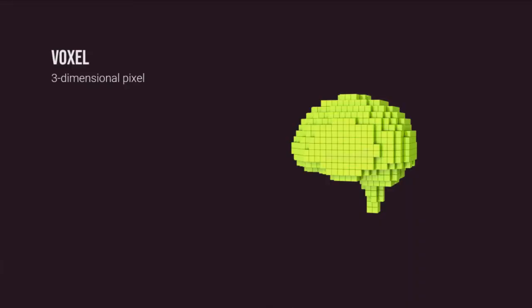fMRI generates a three-dimensional image of blood flow in the brain, measured in voxels — like pixels, but three-dimensional. For fMRI, we can parse brain activity into three-millimeter cubes — three-millimeter voxels. These are the small atomic units of what's being measured, like the pixels in an image. When we look at an fMRI scan, we're looking at these three-dimensional voxels, each about three millimeters on each edge, and we can ask how much blood flow there is in each region.